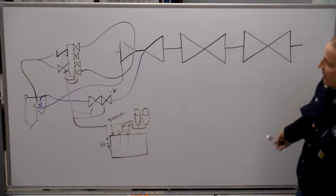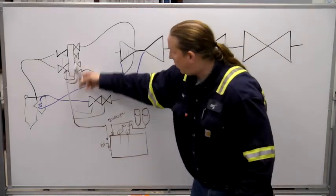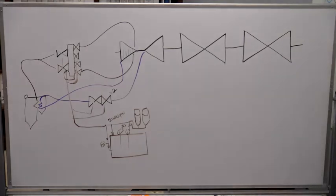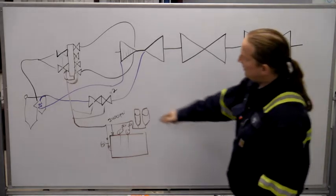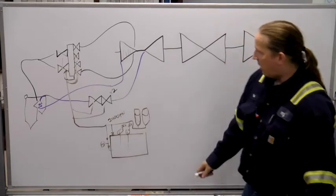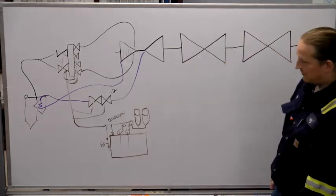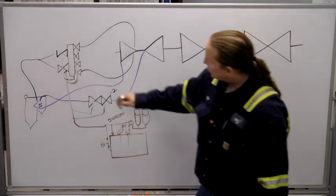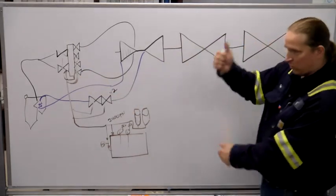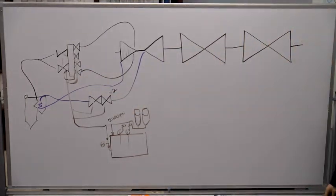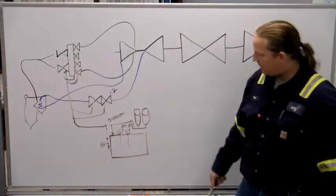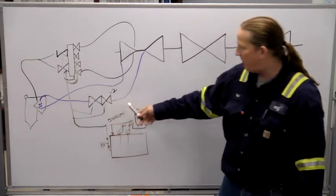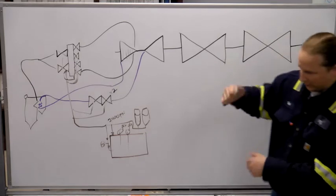If the breaker tripped, it should have tripped the turbine and all of those valves should have already gone shut — things take time. The main steam stop valves are oil to open, spring to shut. The control valves are piston — oil to move in either direction. The intercept valve stop portion is oil to open, spring to shut, and the control valve portion is oil to move in either direction.